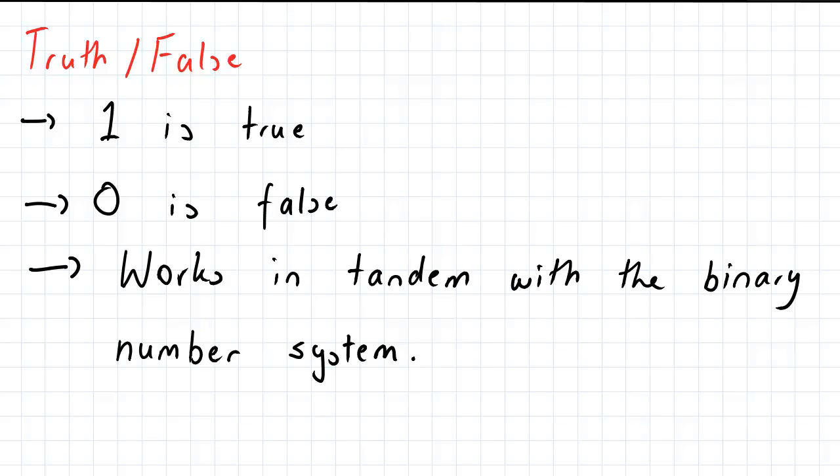And therefore, due to the fact that there's just ones and zeros, it works in tandem with the binary number system. So now this proves crucial in determining what we call truth tables.